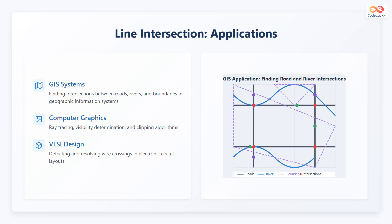Line intersection algorithms have various applications. The first application is in geographic information systems, or GIS systems, finding intersections between roads, rivers, and boundaries.